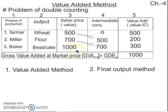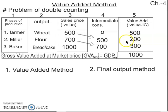Now the baker made bread for 1,000 rupees. The raw material — flour — was 700 rupees, so the value added was 300 rupees. Adding up all three: 500 plus 200 plus 300 equals 1,000 rupees. This is our gross value added at market price.